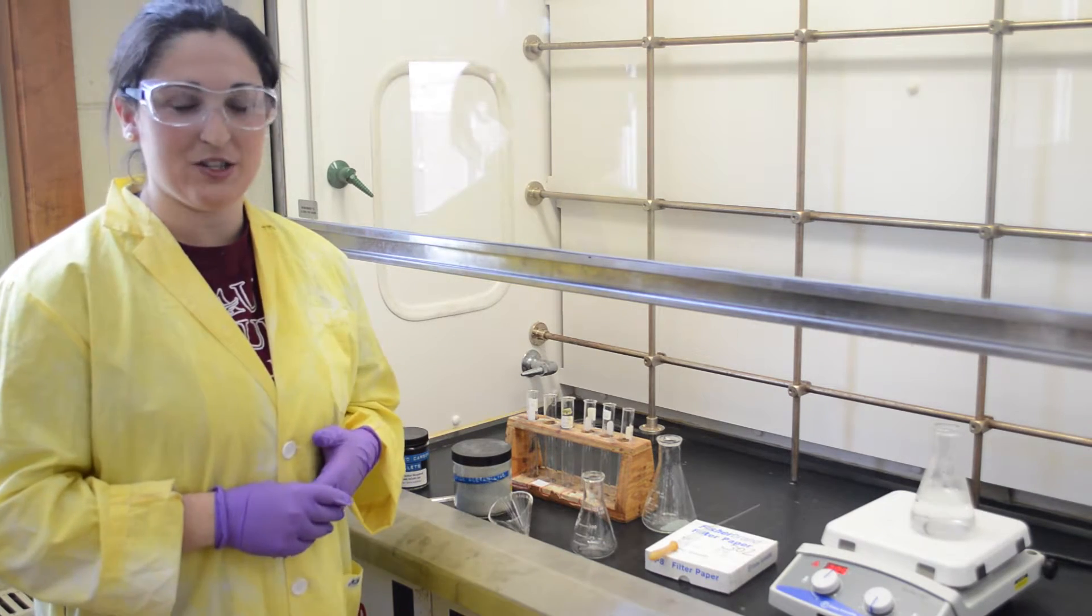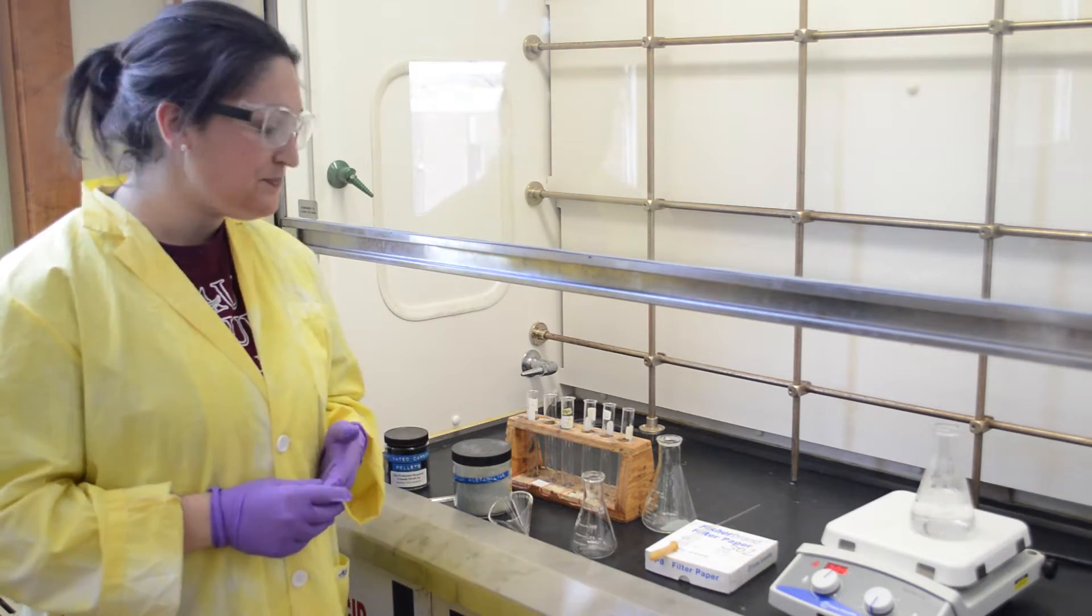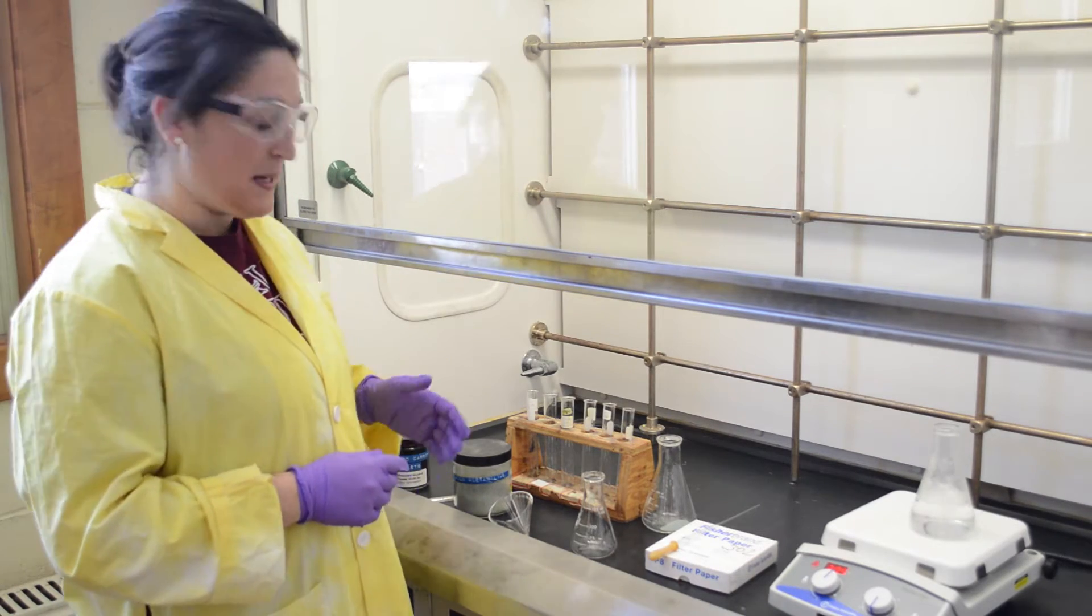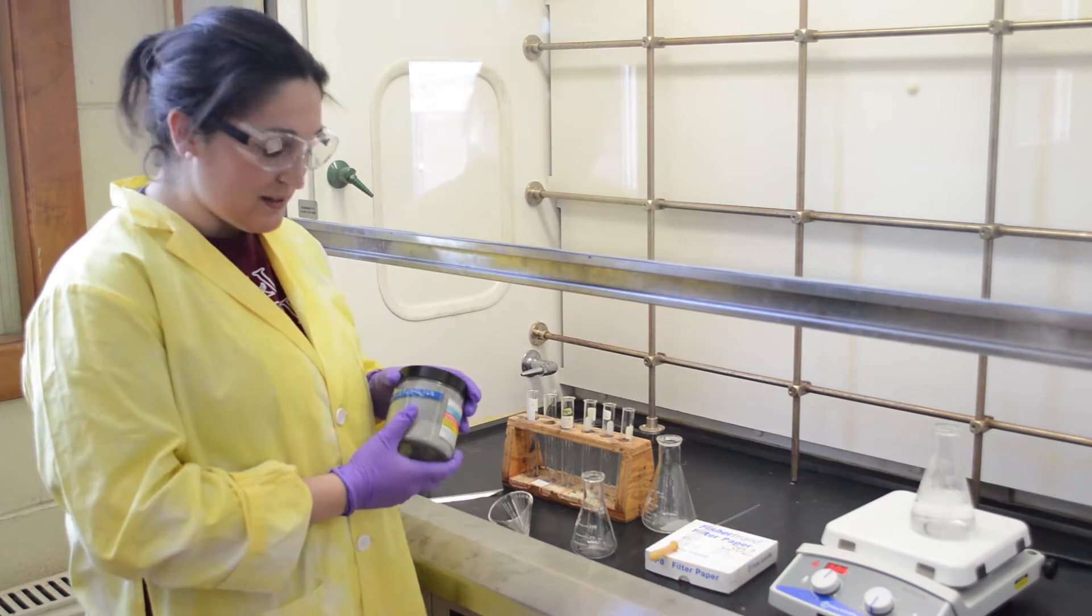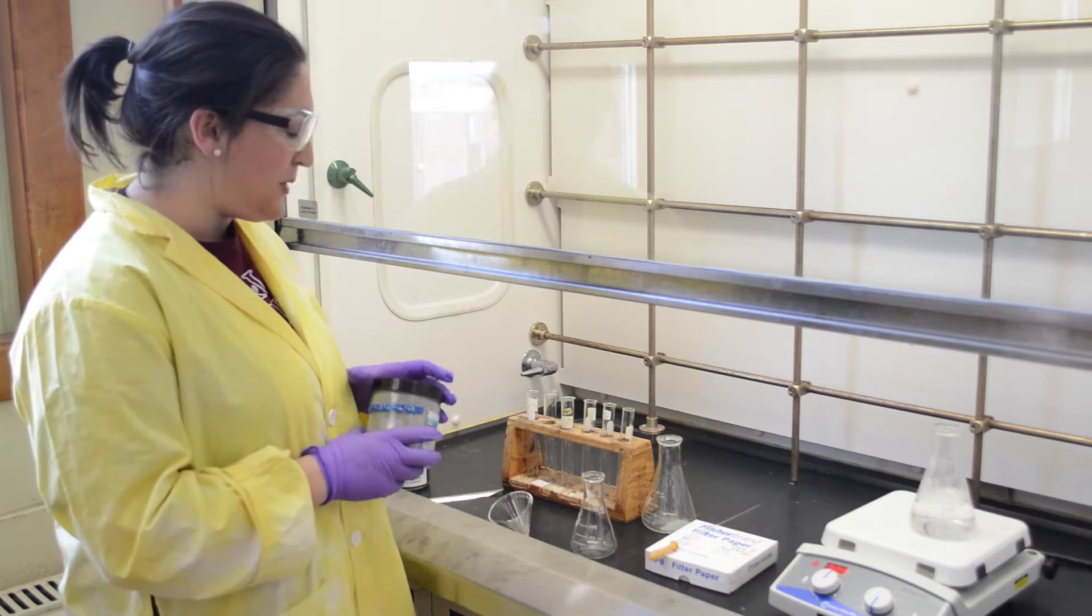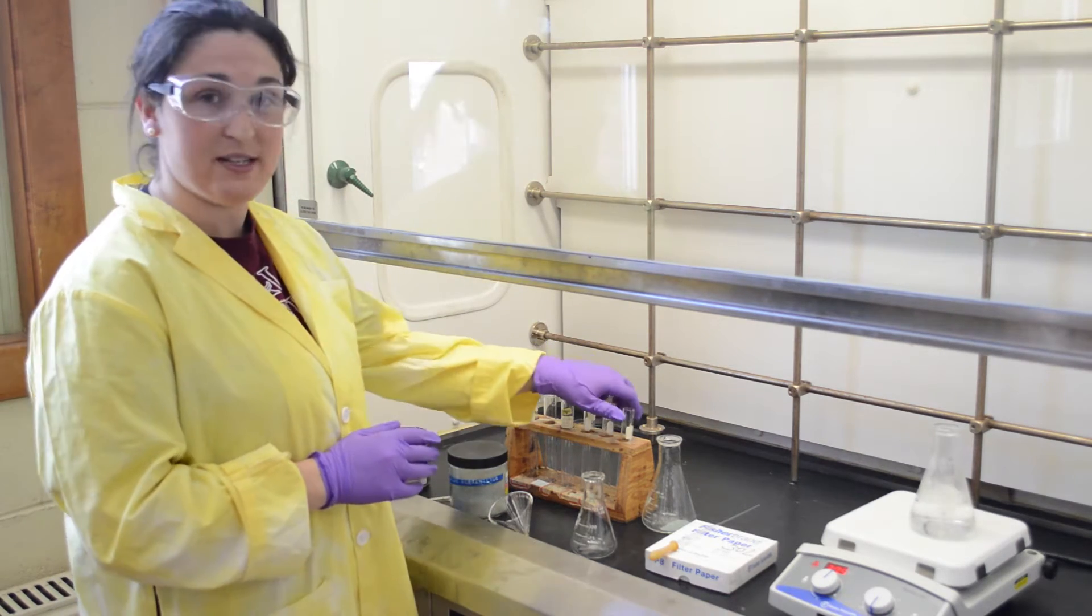The first step to recrystallization is determining the appropriate solvent. To do this, obtain a small amount of the crude product, which is the impure product, and put equal amounts of it into the desired test tubes.